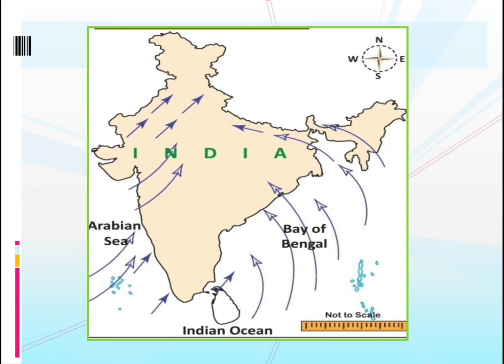The air above the sea has lots of water vapor in it, because the water in the sea gets evaporated and becomes water vapor.